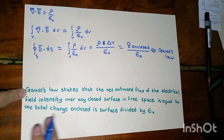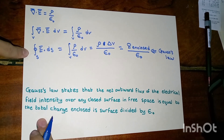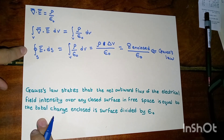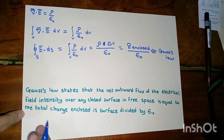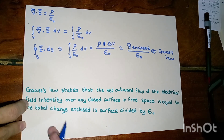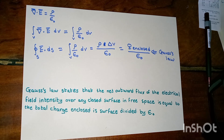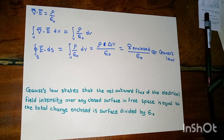Gauss's law states that the net outward flux of the electrical field intensity over an enclosed surface in free space equals the total charge enclosed in that surface divided by epsilon sub-zero. This is the end of our video. We have explained the first fundamental postulate of electrostatics. In the second video, we are going to explain the second fundamental postulate, which is the curl of the electrical field. See you soon in the next video.